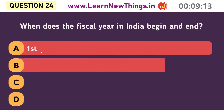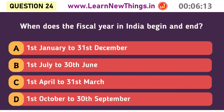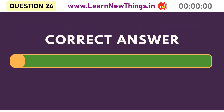When does the fiscal year in India begin and end? 1st April to 31st March.